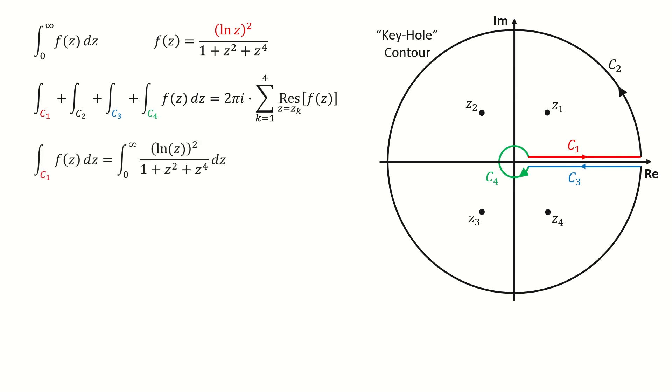For the integral on c1, we write it here. For the integral on c2 and c4, we will talk about them later. Now let's look at the integral on c3. If we set the point on c1, which is on this red line, is z. Then for the point on c3, it will be z times e to the 2πi, because its argument angle revolves an extra 2π radians.